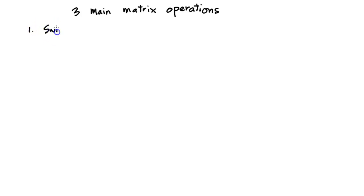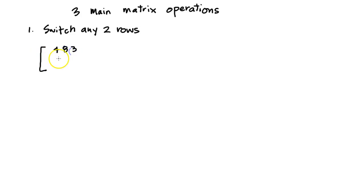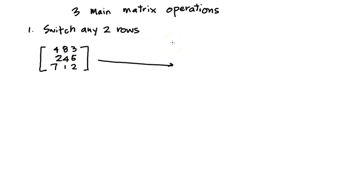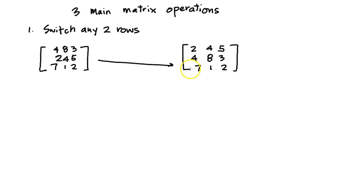The first thing I can do is switch any two rows. For example, let's start with the matrix: 4, 8, 3 / 2, 4, 5. Normally you wouldn't draw them so bunched up because you might get confused. What I'm going to do is switch the first two rows, so it becomes: 2, 4, 5 / 4, 8, 3 / 7, 1, 2. You can do this without harming the matrix in any way, which is kind of interesting.